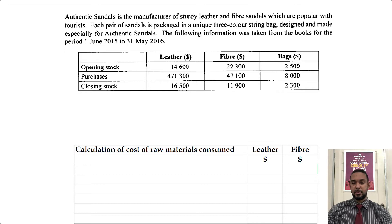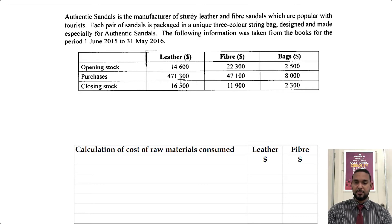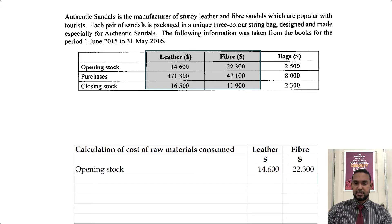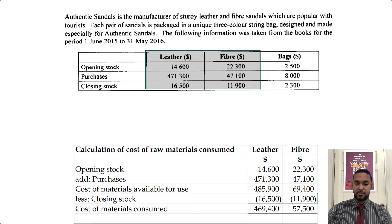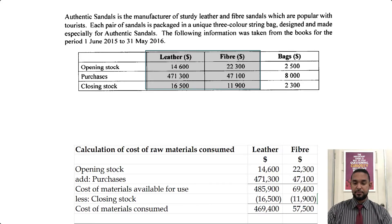So opening stock of $14,600 and $22,300, add purchases of $471,300 and $47,100 — that's cost of materials available for use — and then subtract the closing stock of $16,500 and $11,900, giving us the cost of materials consumed of $469,400 for leather and $57,500 for fiber.